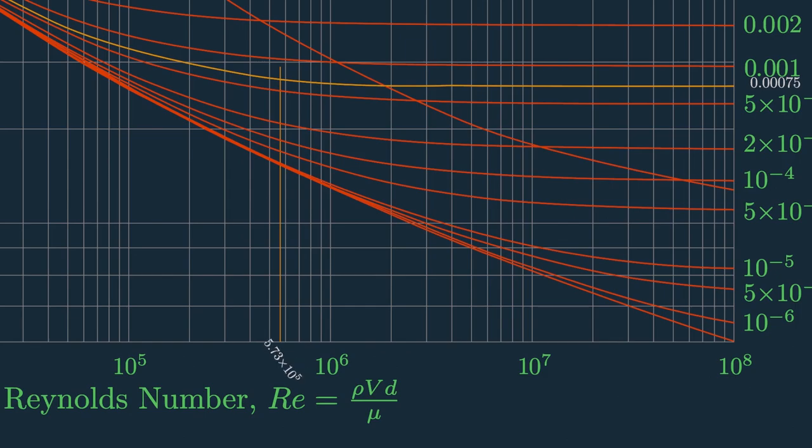Our value is 5.73 times 10 raised to the power 5. So look for the 10 power 5 value. Look 1 times 10 power 5, 2 times 10 power 5, 3 times 10 power 5, 4 times 10 power 5 and finally 5 times 10 power 5.